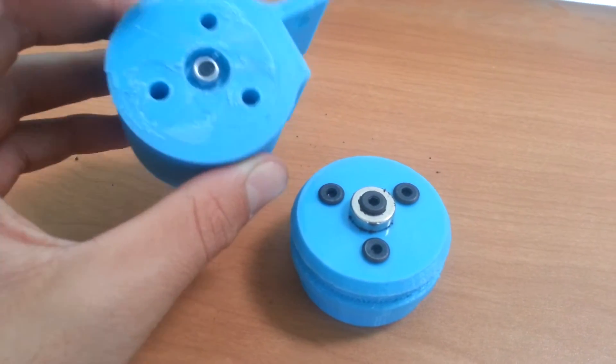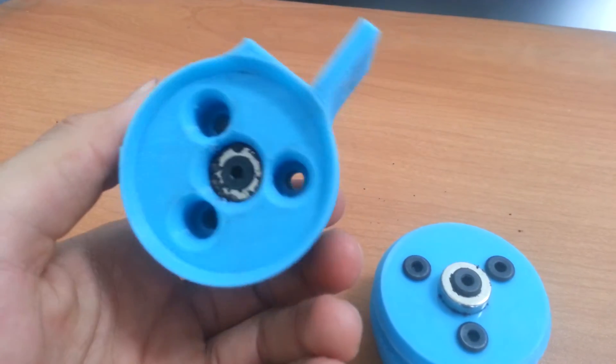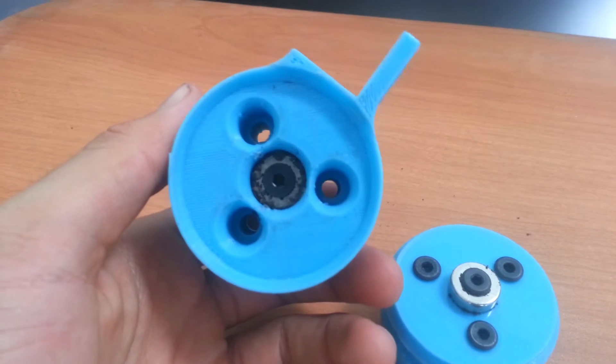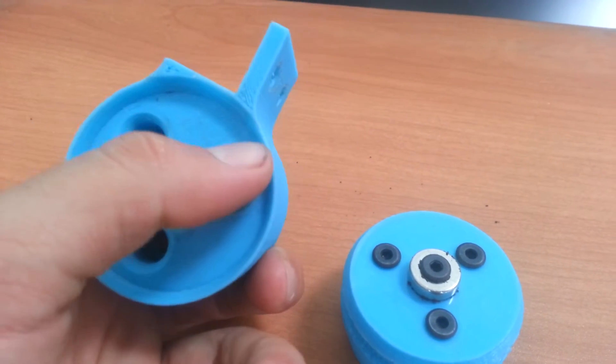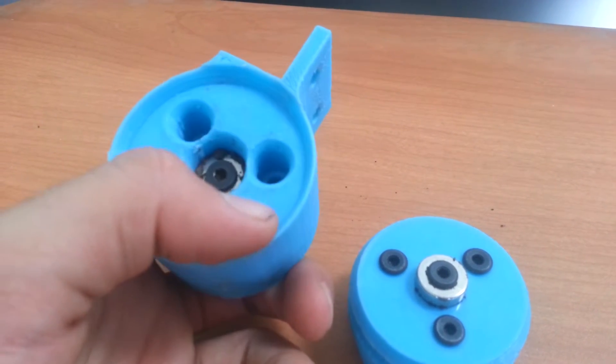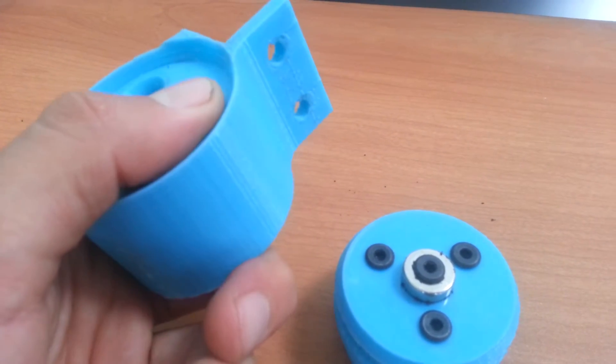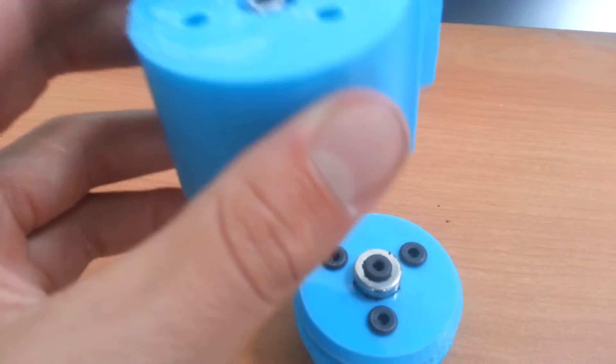Now what was interesting about this design was we had down here a neodymium magnet held in, and then these screws around the perimeter were going to have springs that they'd be spring-loaded and would depress when the tool went into the mount.